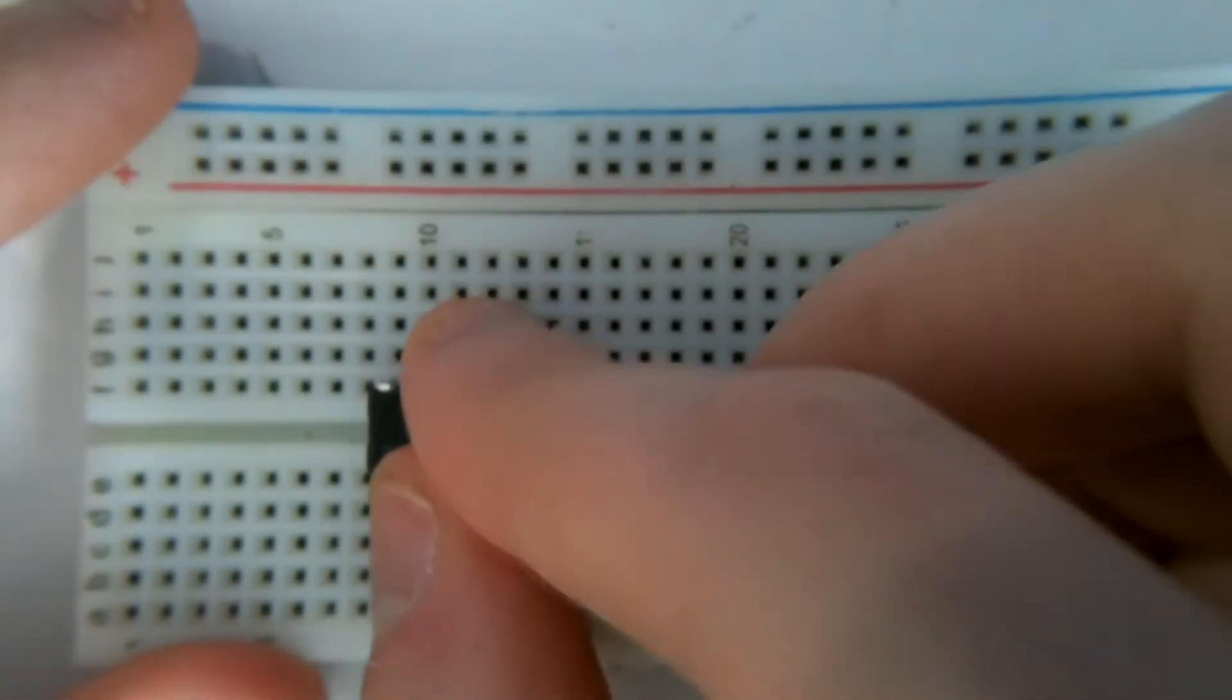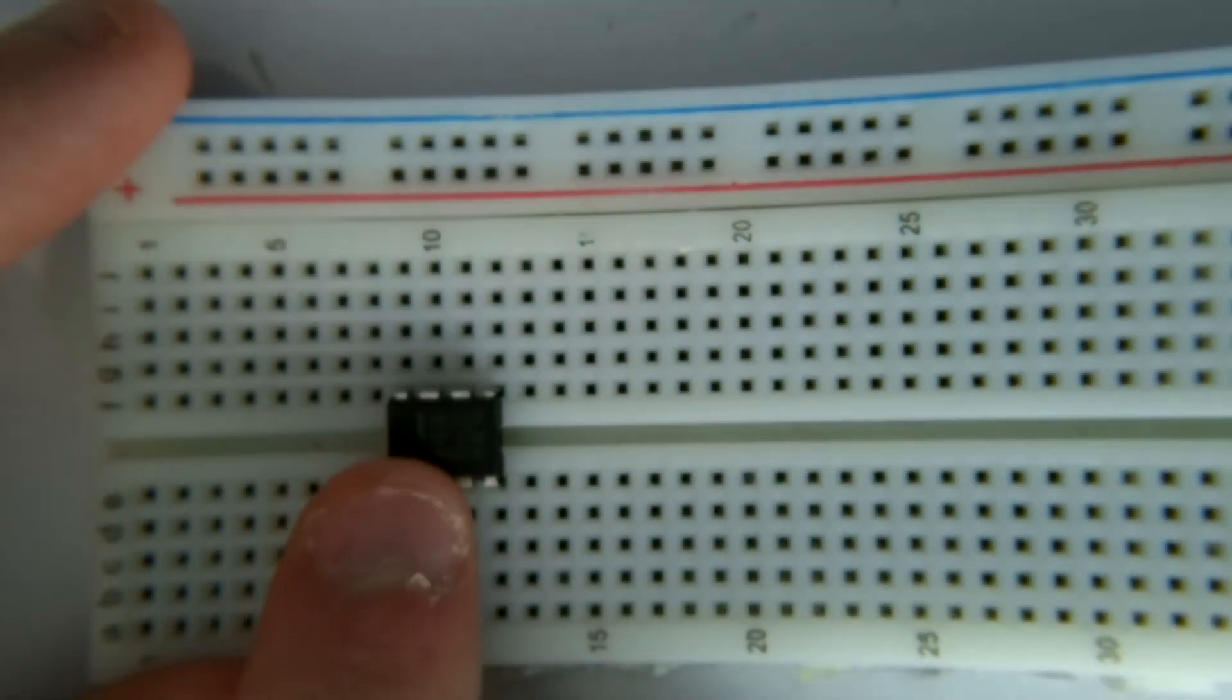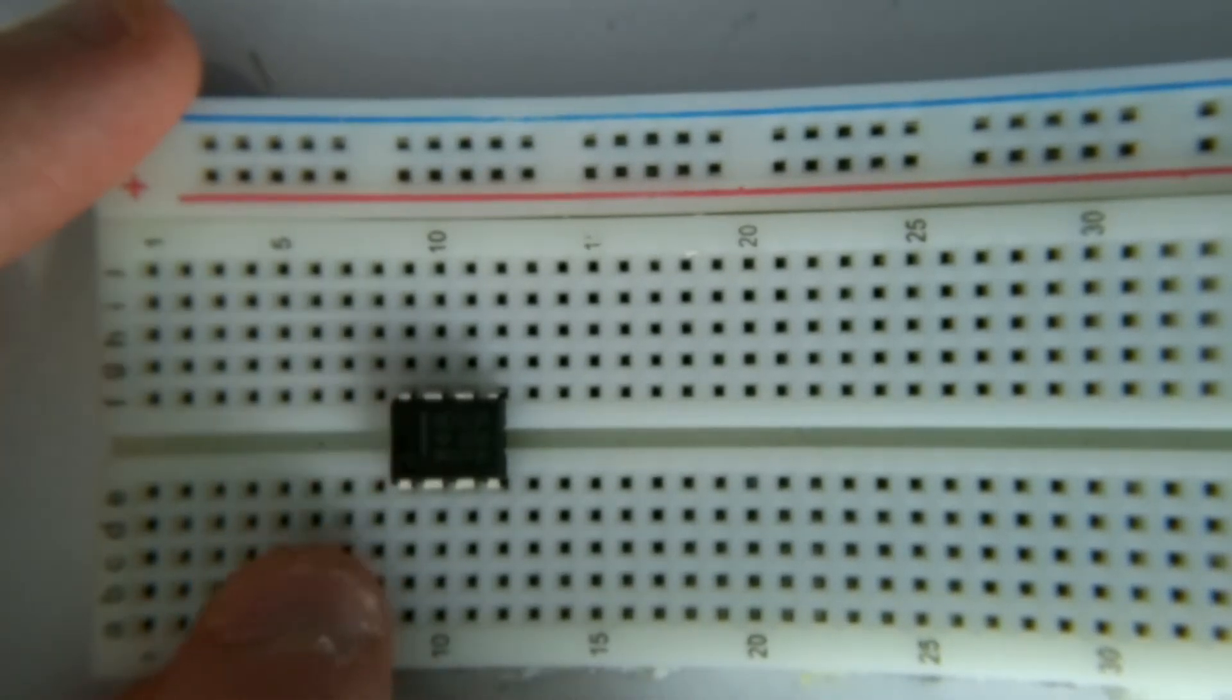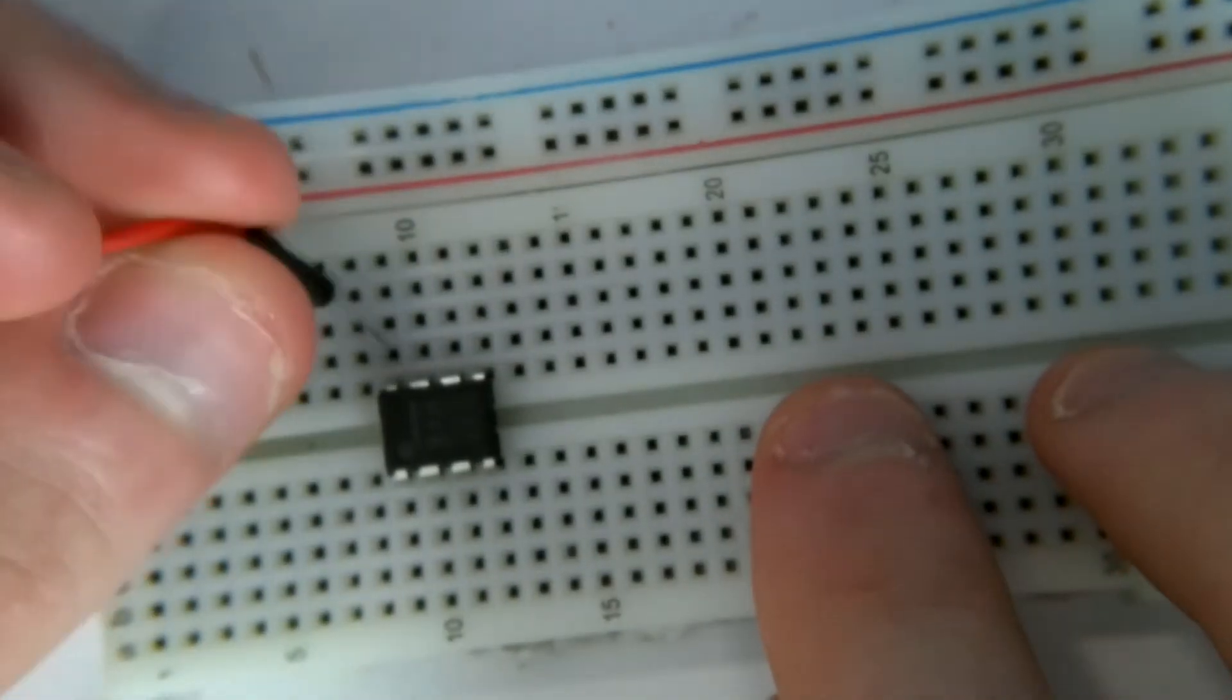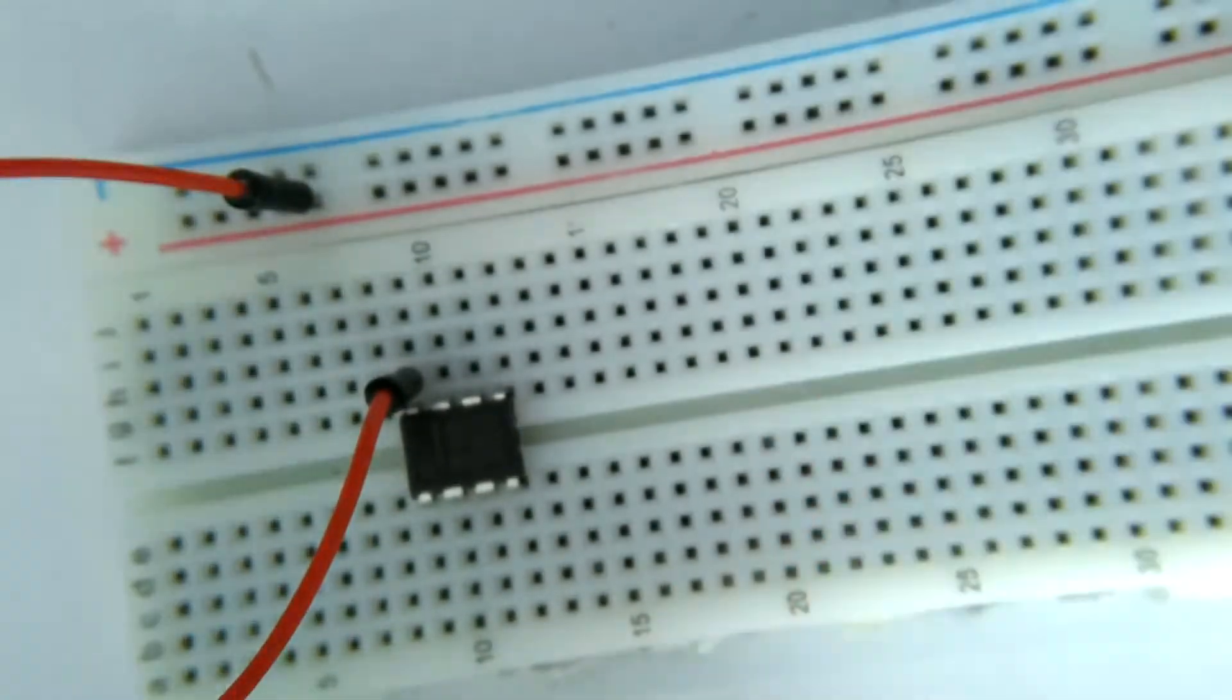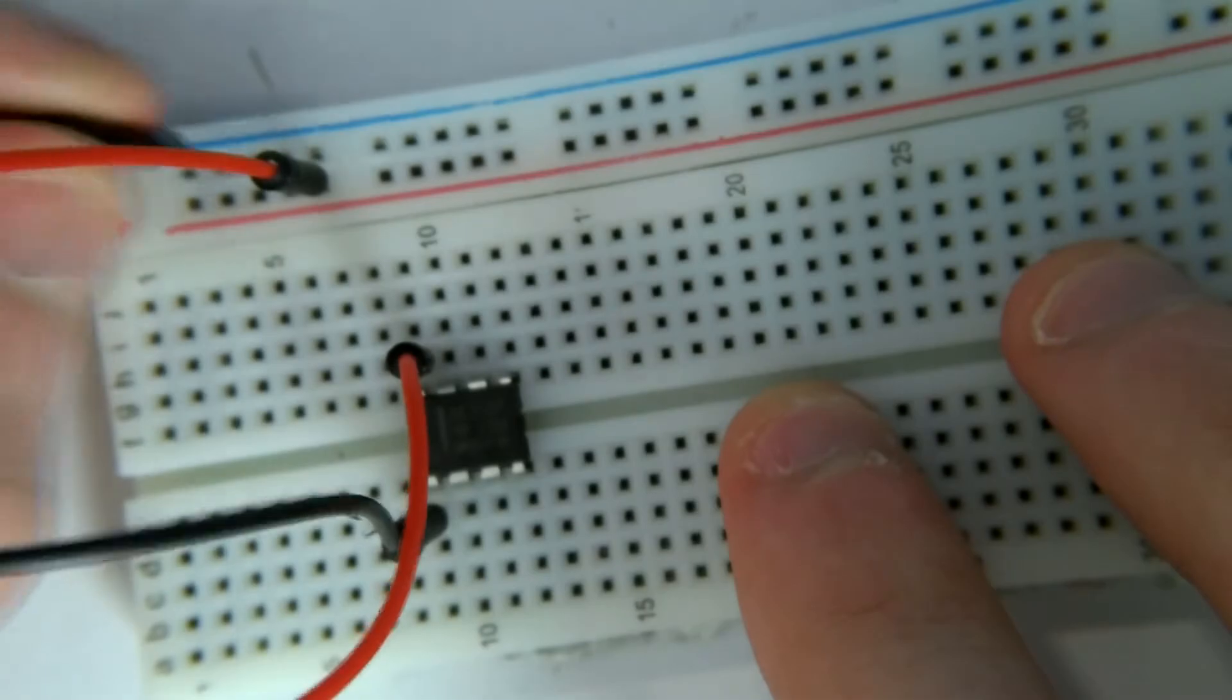So I'm going to take the 555 timer and straddle it across this center line like this. The notch on the left side of the integrated circuit represents the directionality. The bottom left pin is pin 1 and the upper left pin is pin 8. And the pins increase snaking around like this. Pin 8 is VCC in, so we're going to go ahead and hook up a connector between pin 8 and the positive power rail. Likewise pin 1 is ground, so we're going to hook up a jumper from pin 1 to the ground rail.